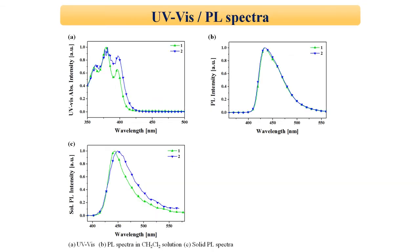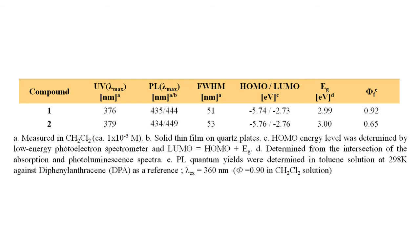We evaluated the photophysical properties of materials such as ultraviolet absorption and photoluminescence in dichloromethane solution as well as quartz plates. The resulting data are shown in figures and summarized in table. The maximum emission wavelengths of materials were recorded around 434 nm in dilute dichloromethane solution, which correspond to deep blue regions in the visible spectrum.